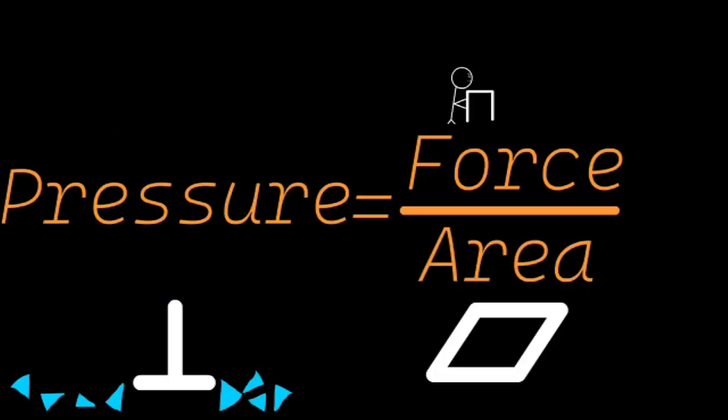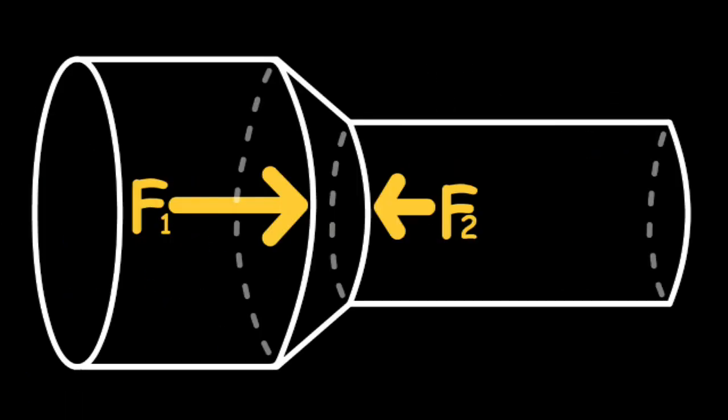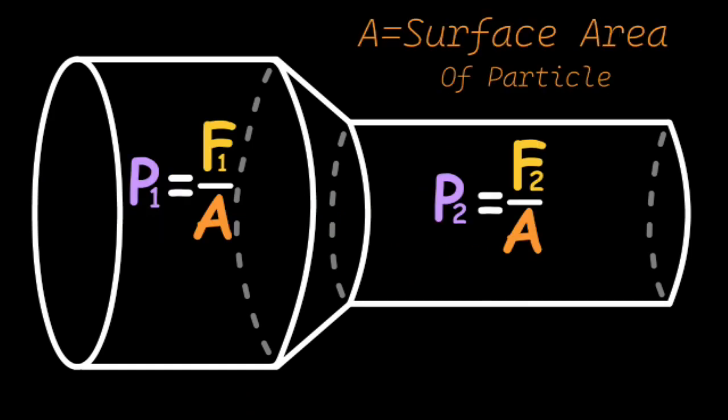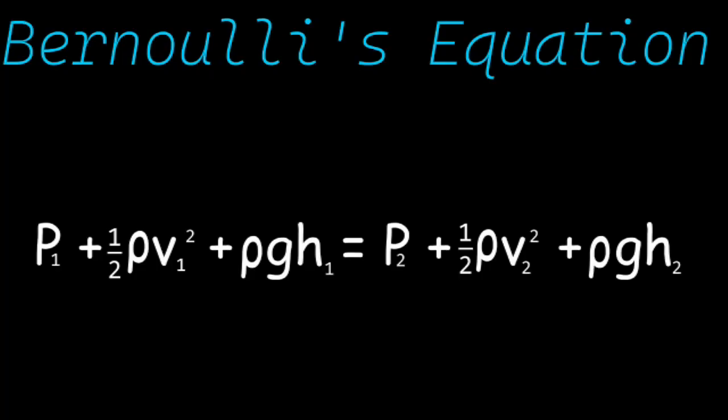Pressure is defined as force over area, and because F1 is greater than F2, the pressure in region 1 is greater than region 2. This is represented through Bernoulli's equation.